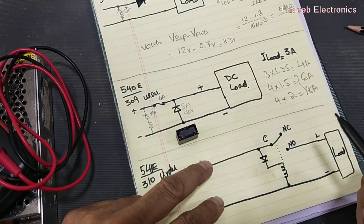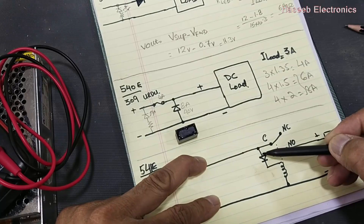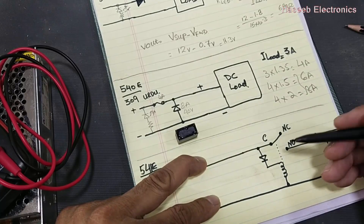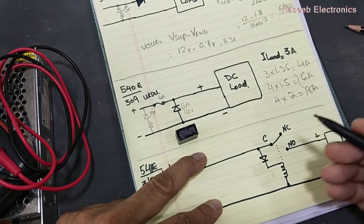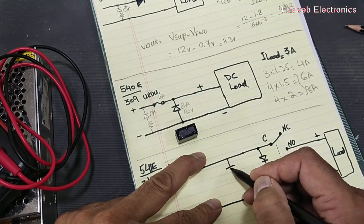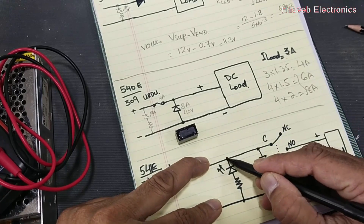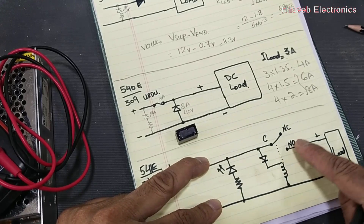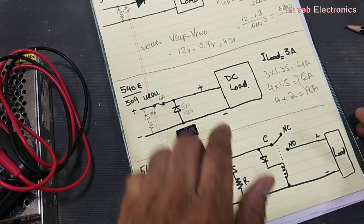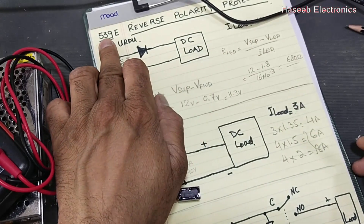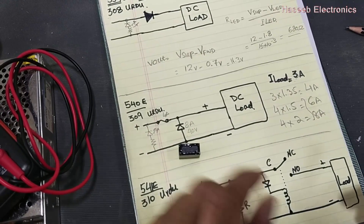When the polarity is reversed, negative will be applied to the anode of the diode, so the relay will remain off. We can connect an LED here — when there is reverse polarity, this LED will indicate that the circuit is not operating due to reverse polarity. The resistor value for the LED was discussed in video 539.